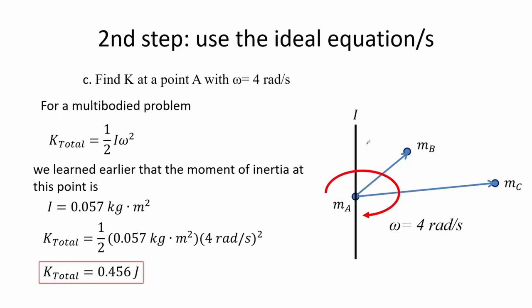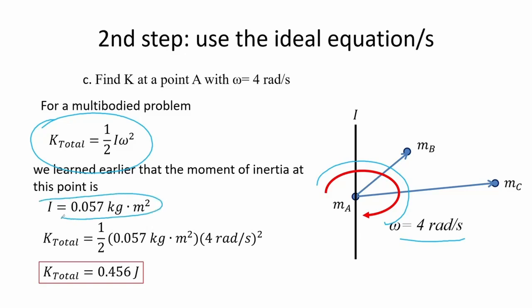For letter C, we rotate the system with an angular velocity of 4 radians per second. To find the kinetic energy for this system, we use the expression: kinetic energy equals one-half times moment of inertia times the square of angular velocity. Substituting the moment of inertia value obtained earlier, the total kinetic energy equals 0.456 joules.